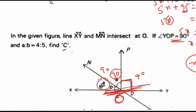We need angle C, not A. So this is 90, this is 30, this is 60. If it is 60, this angle will also become 60 because they are vertical opposite angles. So the angles are: 60, 30, 60, and 90.